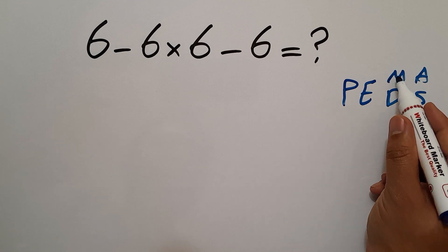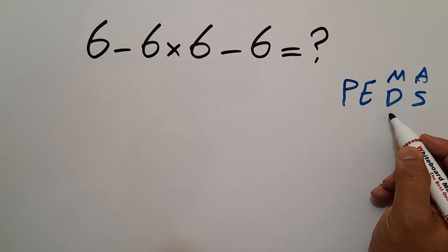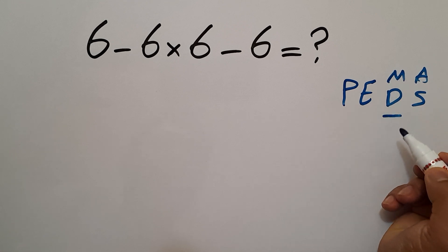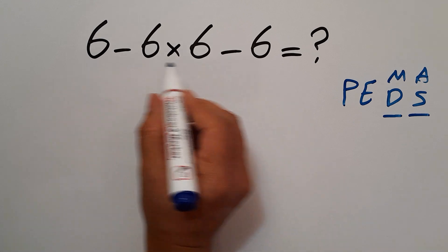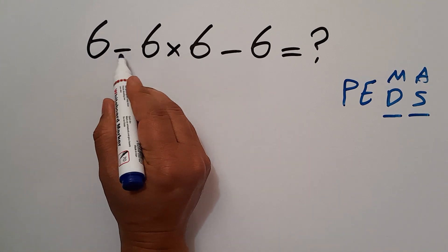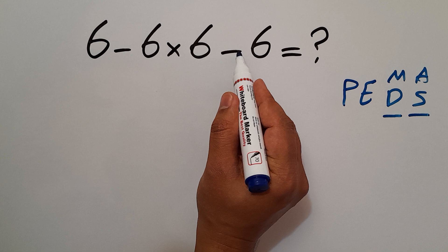Remember that multiplication and division have equal priority and we have to work from left to right, and the same applies to addition and subtraction. Okay, in this expression we have two subtractions and one multiplication. In PEMDAS, multiplication comes before subtraction.